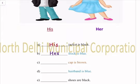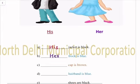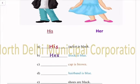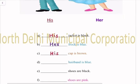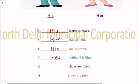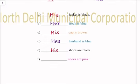Her frock is blue. His cap is brown. Her hair band is blue. His shoes are black. Her shoes are pink.